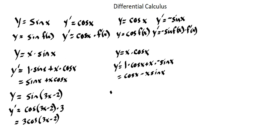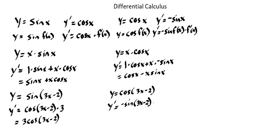And a second example: if our function is cosine of (3x minus 2), then our derivative is negative sine of (3x minus 2) times the derivative of (3x minus 2), which is 3. This simplifies to negative 3 times sine of (3x minus 2).